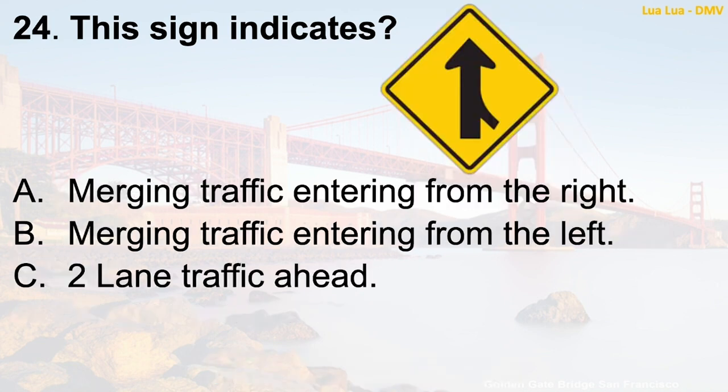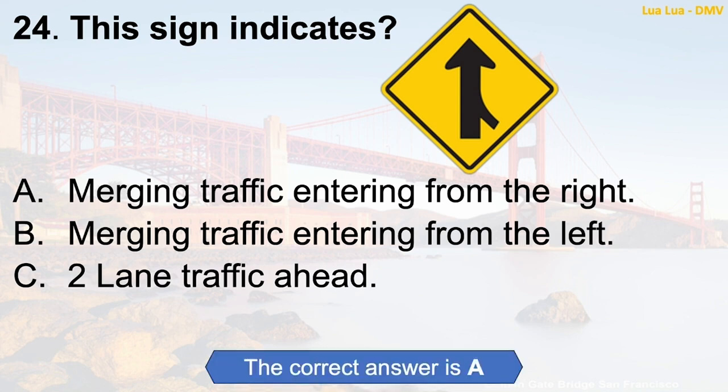Question 24: This sign indicates — A. Merging traffic entering from the right. B. Merging traffic entering from the left. C. Two-lane traffic ahead. The correct answer is A: Merging traffic entering from the right.